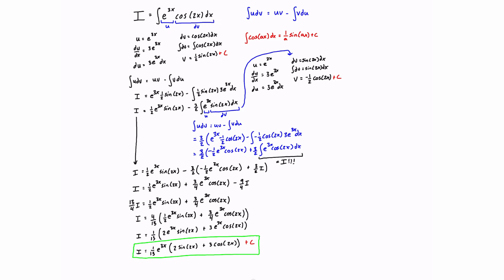Hopefully that helps. Don't forget to add the plus c at the end — it's absolutely required. If you ever see a problem with an exponential times a trig function, you'll apply integration by parts twice, using the special condition where the integral eventually turns back into the original integrand, and you use that to solve for I algebraically. Thanks for watching, and I'll see you in the next integration by parts example.